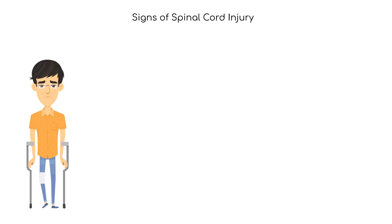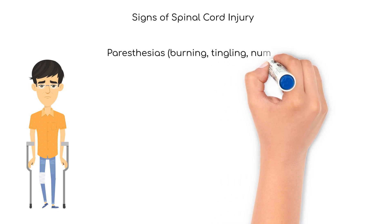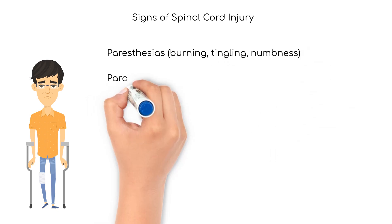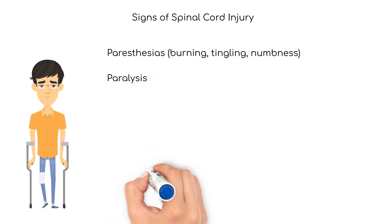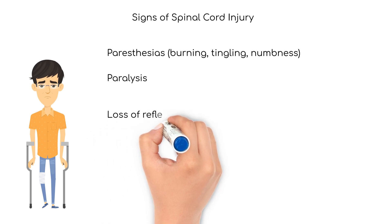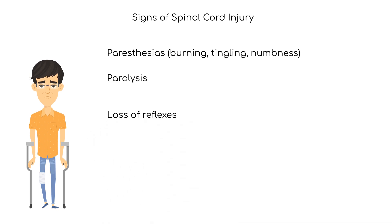Signs of spinal cord injury range from paresthesias — abnormal sensations such as burning, tingling, and numbness — to paralysis. There can also be loss of reflexes and autonomic dysfunction, including blood pressure changes and alterations in heart rate, sweating, and breathing.